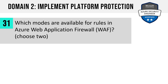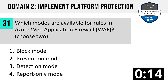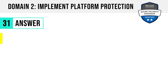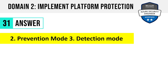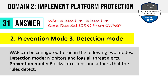Number 31. Which modes are available for rules in Azure Web Application Firewall? Choose two: block mode, prevention mode, detection mode, or report only mode? The answer is two and three: prevention mode and detection mode. Detection mode monitors and logs all threat alerts. Prevention mode blocks intrusions and attacks that the rules detect. WAF is based on the core rule sets from OWASP, so you're protecting from the OWASP top 10 right out of the box.